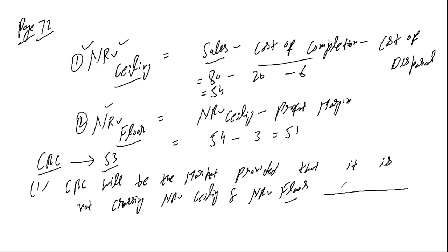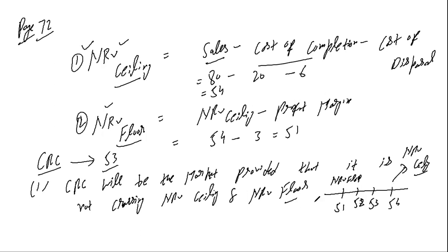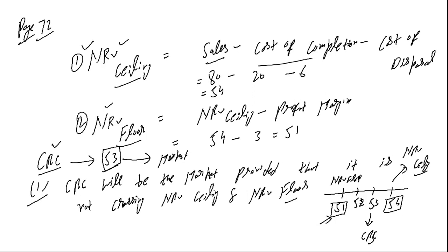On the number line: NRV floor is 51, CRC is 53, and NRV ceiling is 54. You can see that CRC of 53 is staying between these two values — it's not crossing either limit. So in this example, rule number one's condition is satisfied, and therefore CRC is declared as the market.